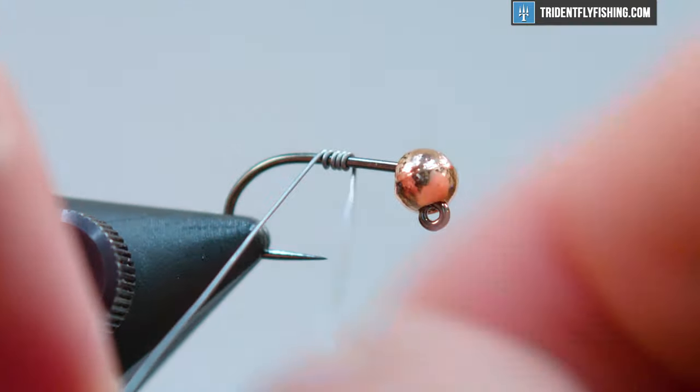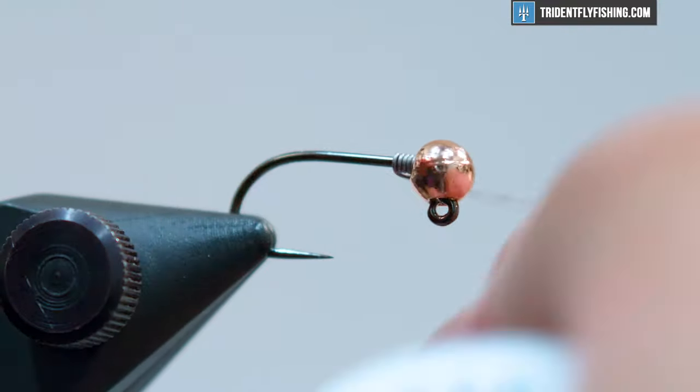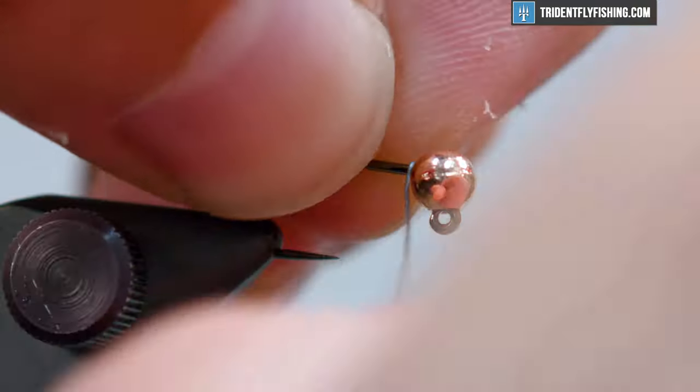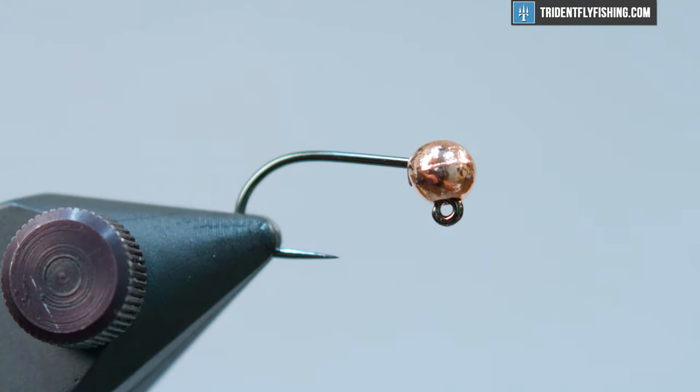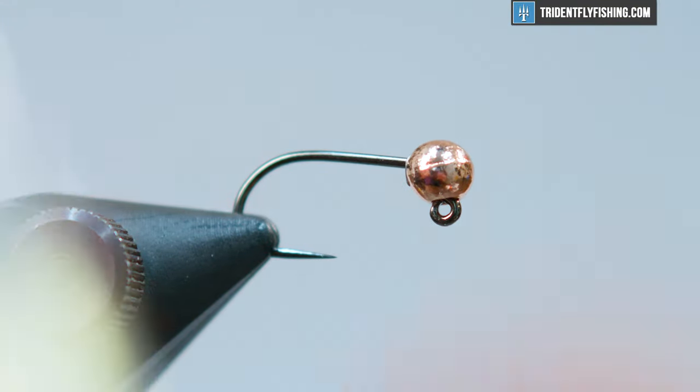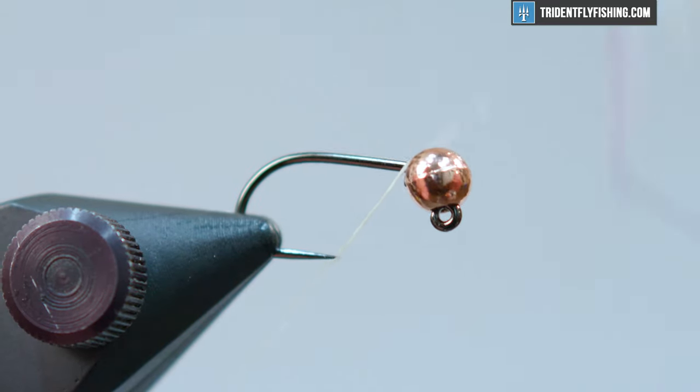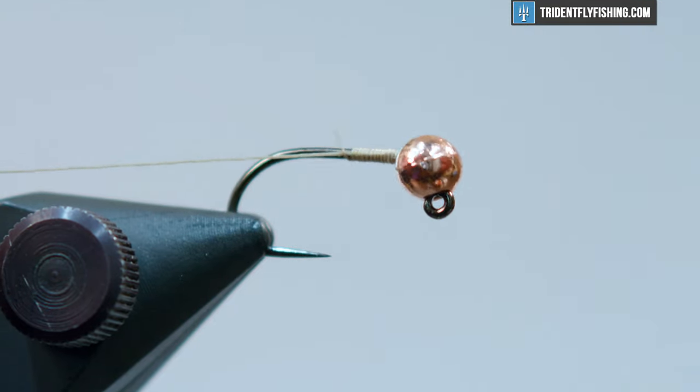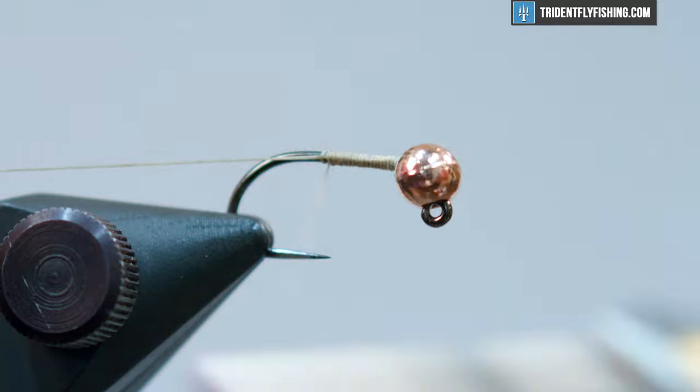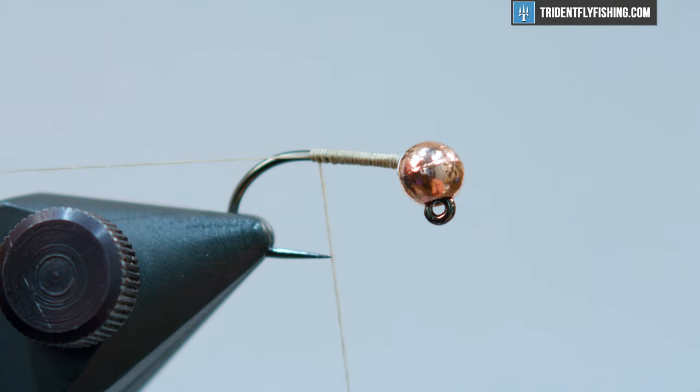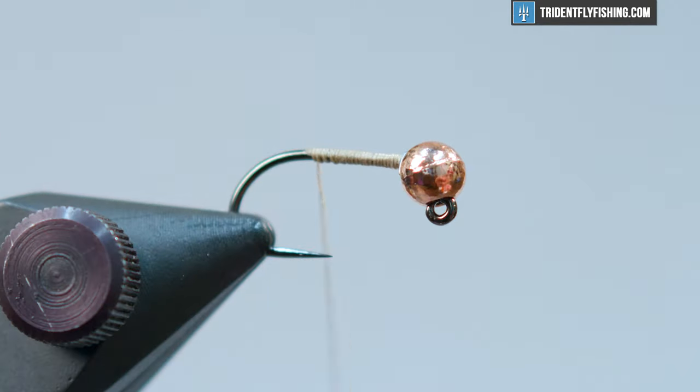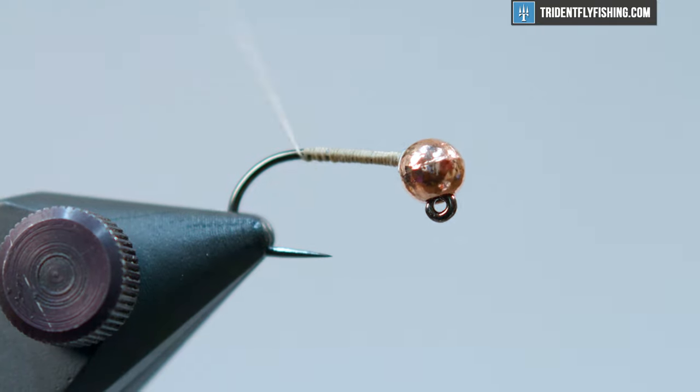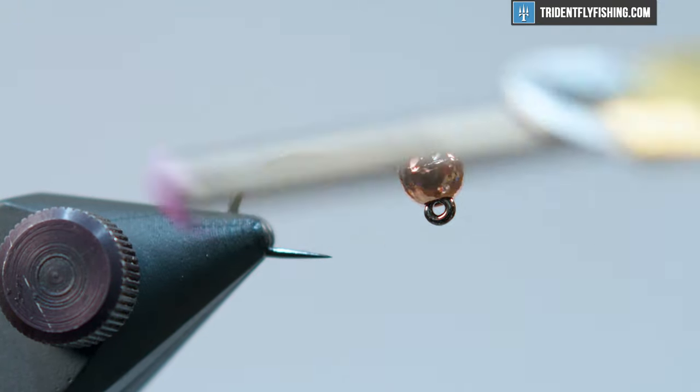Let's wind a couple of wraps of lead and get those just pushed right into that bead. That'll secure everything and it will also add a little extra weight in there. Get that in there and then we're going to wind the hook with some thread. For thread we're using 6 aught uni in the color tan. Just to the bend and we can even drop it down below the bend a little bit.